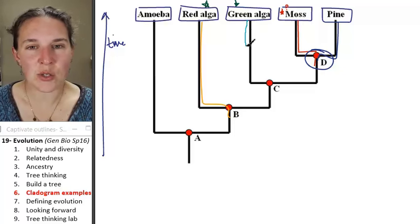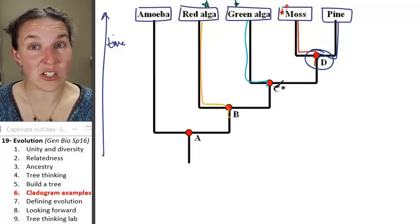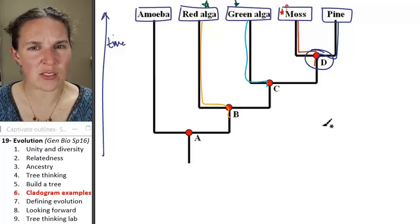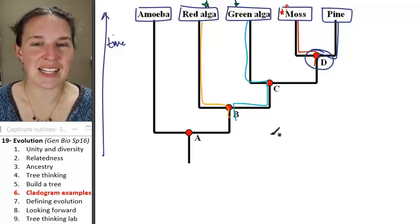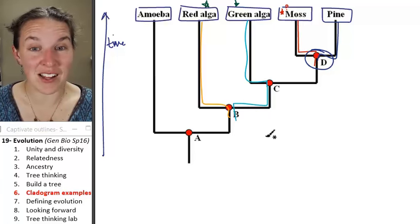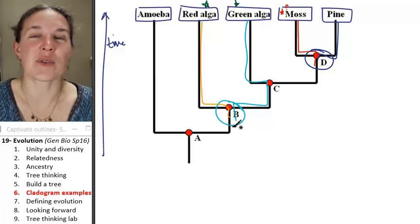But let's go ahead and trace back green algae. Green algae has an ancestor at C. Is that a shared ancestor with red algae? No, no, no. The most recent common ancestor between green algae and red algae is B. Do you totally agree with that? Okay, are you ready for this one?